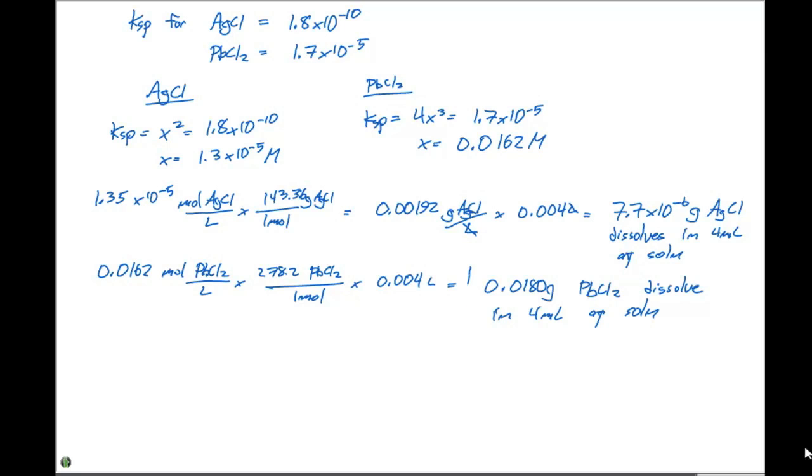So in terms of the values that we calculated, the lead chloride is an easy measurable mass. But the silver chloride is gonna be much, much smaller.